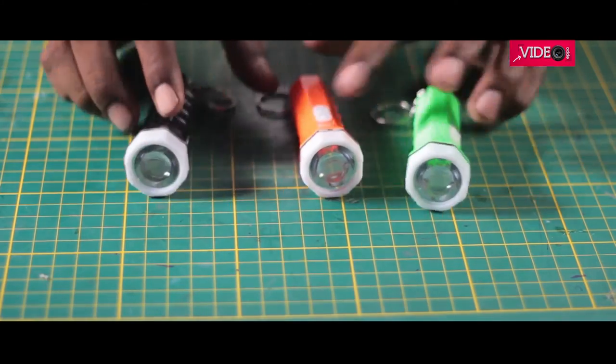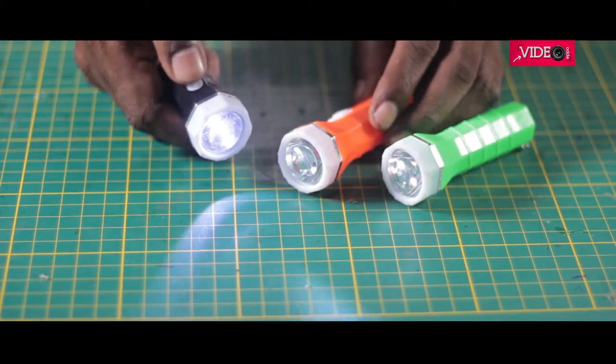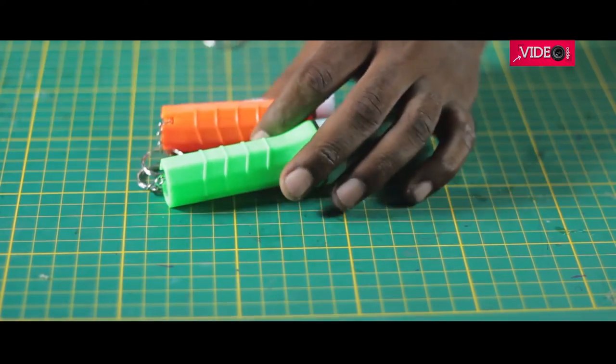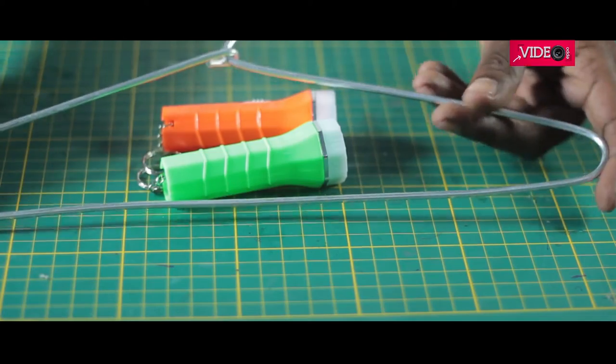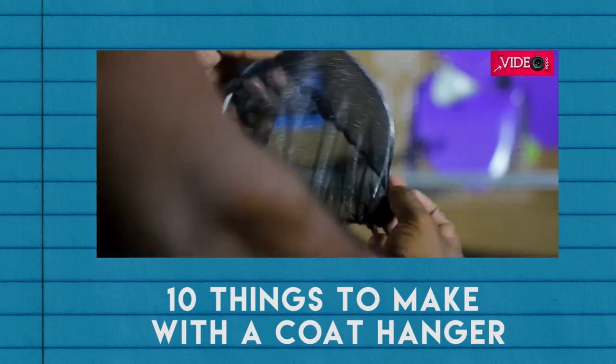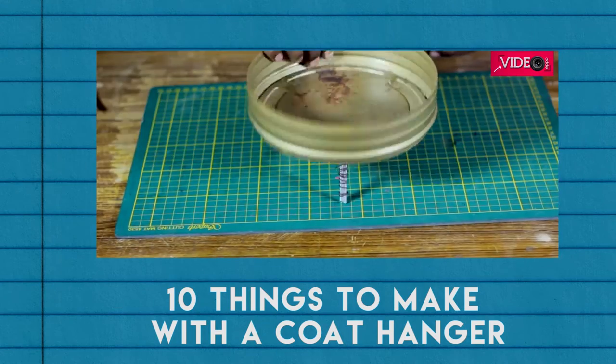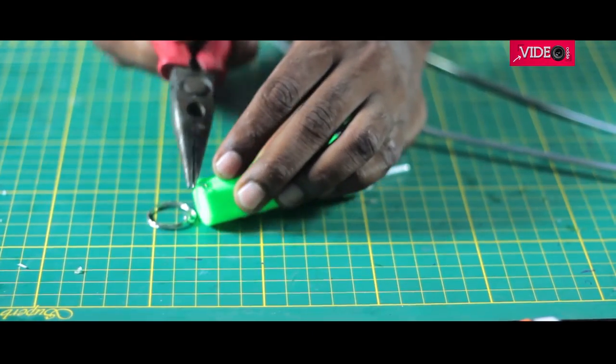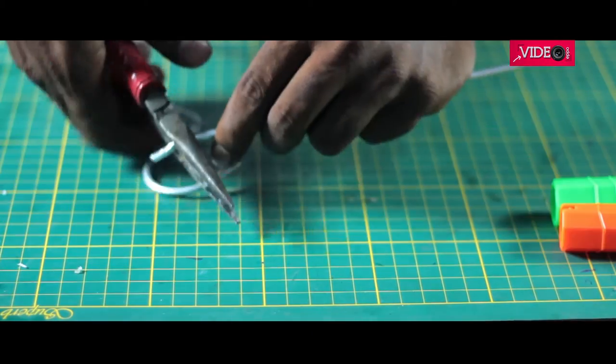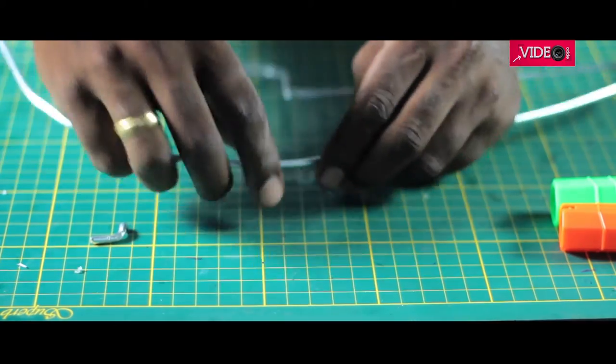And for our next make, some of these inexpensive keychain torches can be used. I got them for 10 rupees each. You might also need a coat hanger. Check for my other video on 10 things you can make with a coat hanger. I removed the key rings and they come off without any hassle. Then I took the aluminum hanger and bent it to the length of my neck.